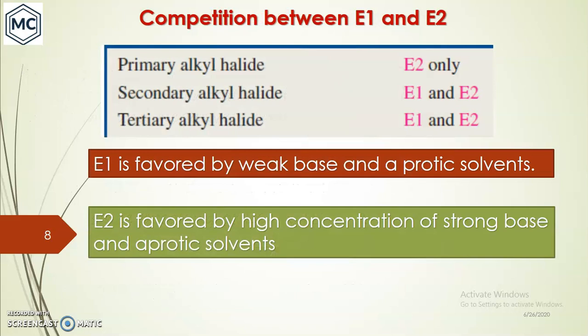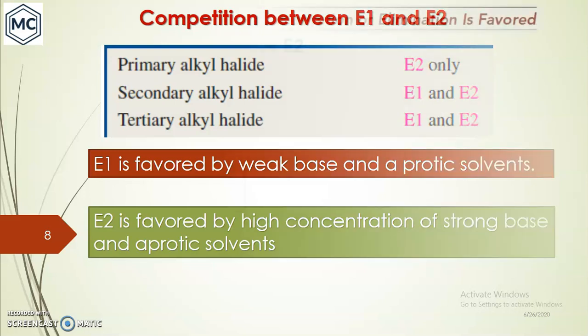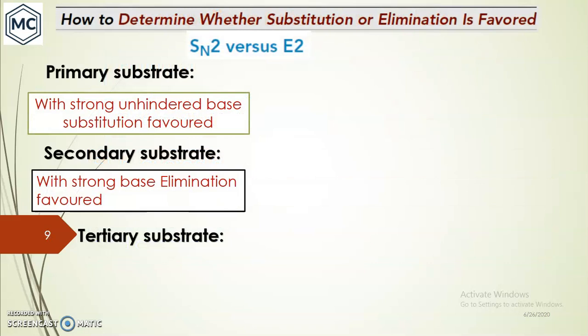In summary, comparing E1 and E2: primary alkyl halides usually give only E2 elimination; secondary can give both E1 and E2; tertiary can give both E1 and E2. E1 is favored by weak base and protic solvent; E2 is favored by high concentration of strong base and aprotic solvent.